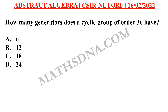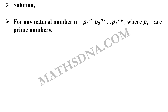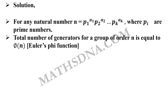This is a single formula-based question. If you just knew one formula — that is Euler's phi function — then you would have been able to solve this question in just a fraction of seconds. Let us go through the formula. For any natural number n, which can be written as p1 raised to a1 into p2 raised to a2 up to pk raised to ak, where the p's are prime numbers, the total number of generators is given by phi of n, where n is the order of the group.